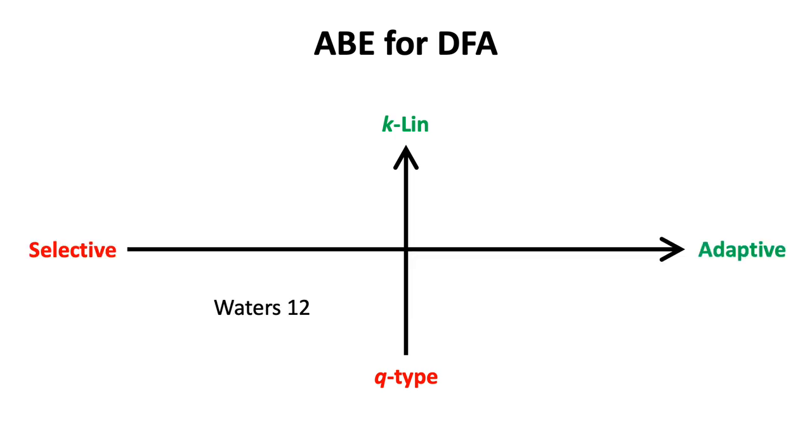The research on ABE for DFA was initiated by Waters in 2012. The proposed scheme is selectively secure under q-type assumption. With the powerful dual-system method, adaptively secure schemes were proposed but still under the q-type assumption.